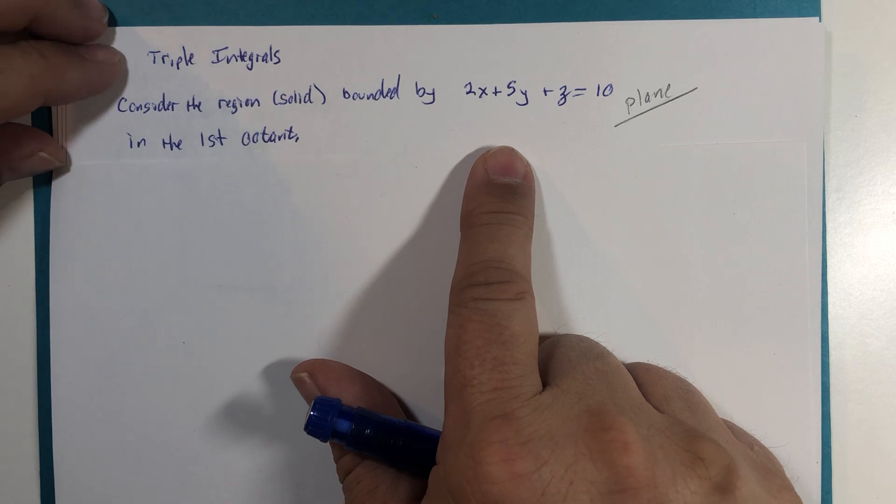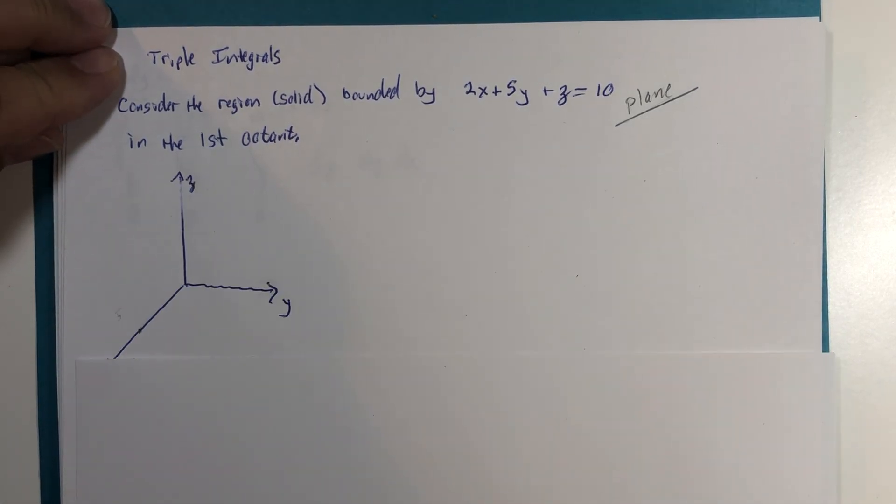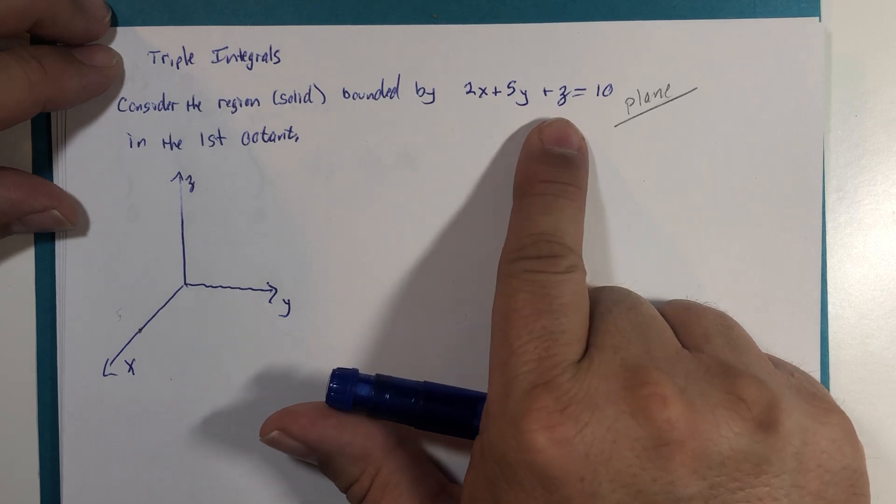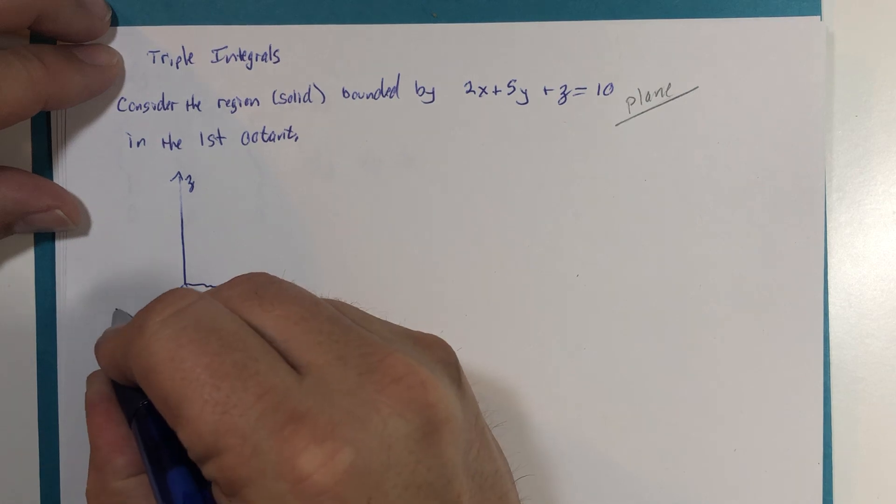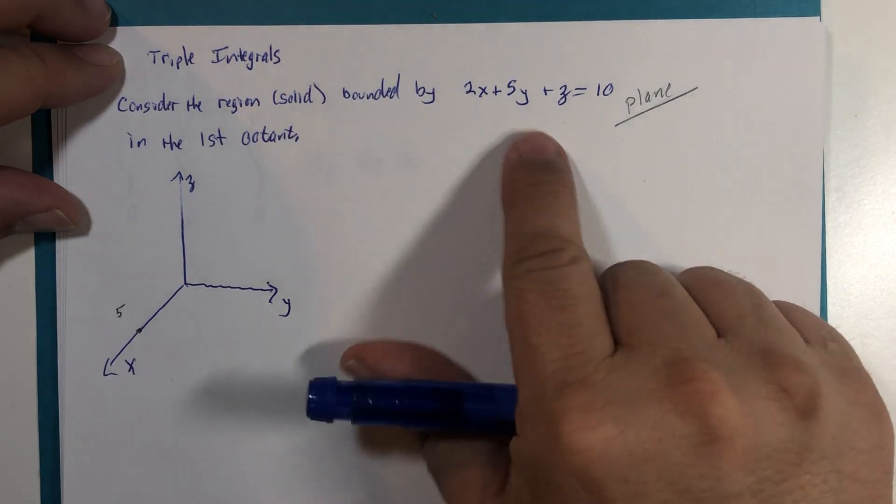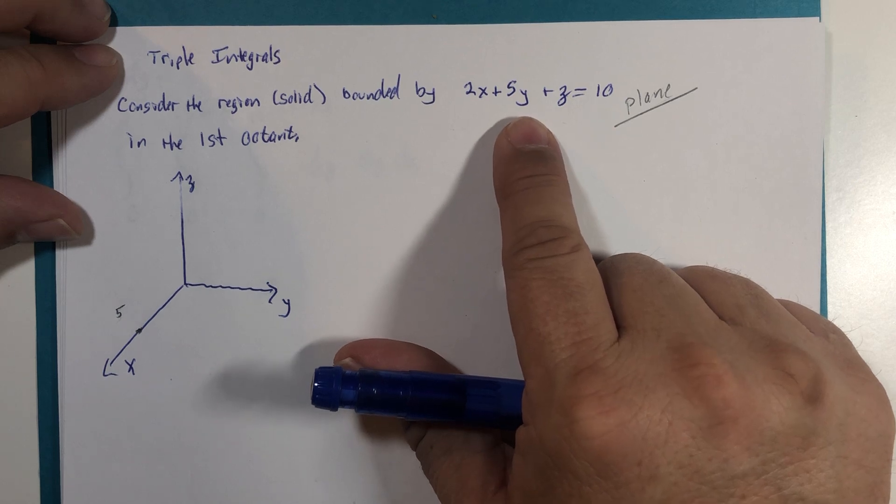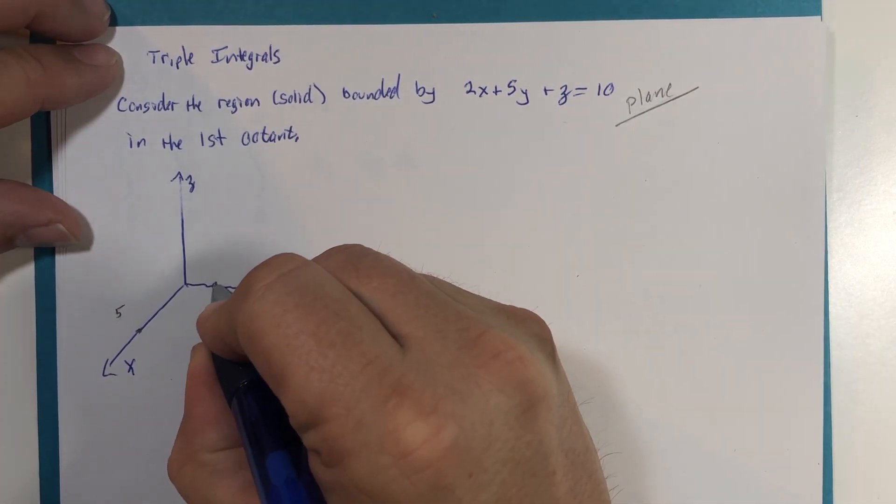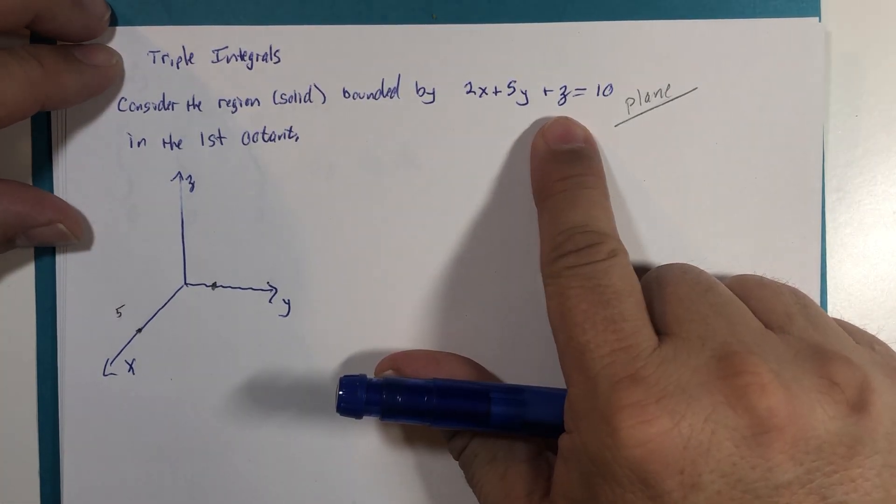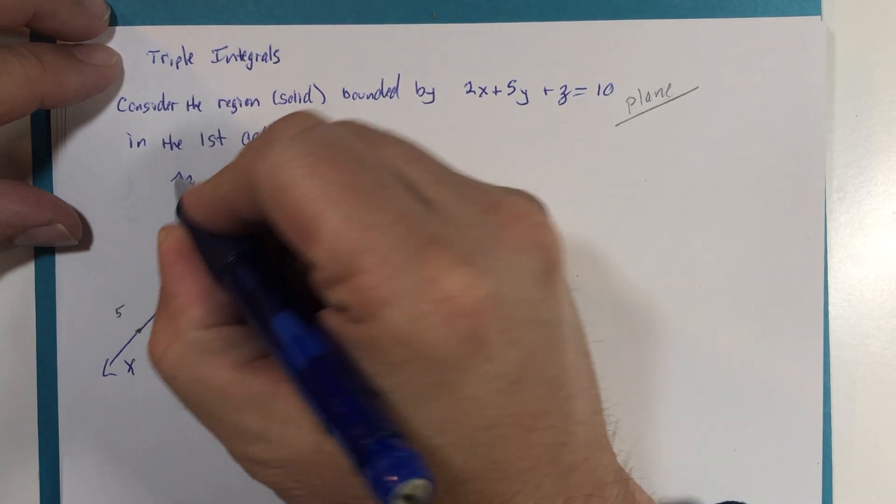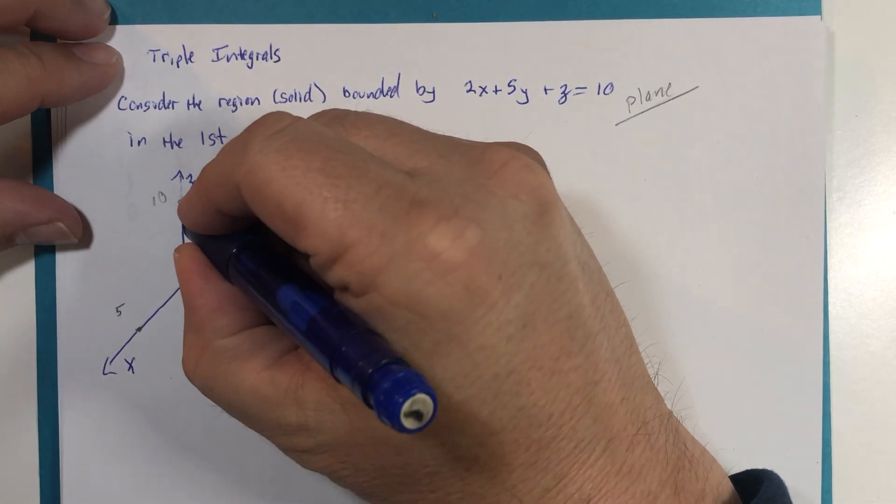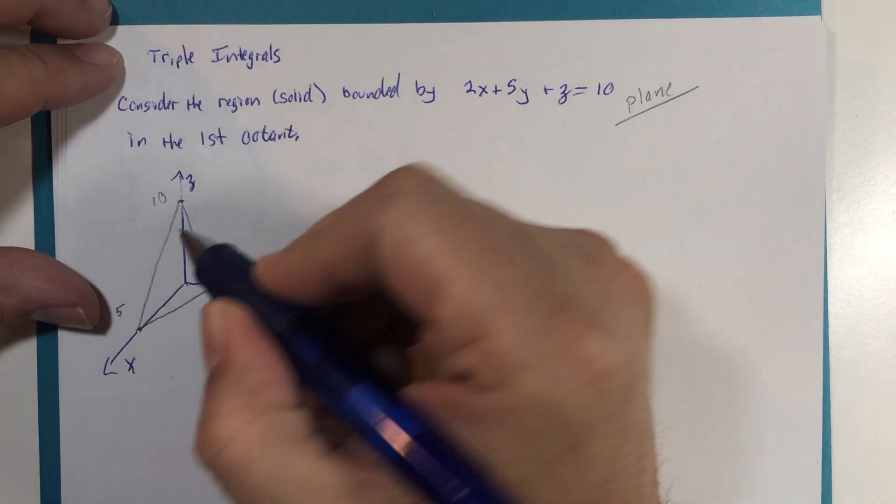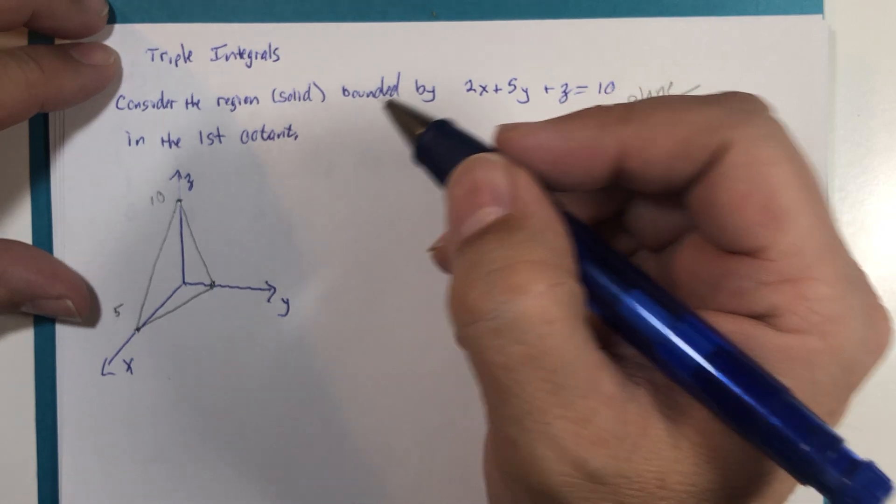And we're going to do a volume calculation for this particular example. So let's do a sketch. If x is 5, 2 times 5 is 10. And if y and z are both 0, we would have our x-intercept 5 units along the x-axis. And if y is 2, and x and z are both 0, then 5 times 2 is 10. So 2 units out along the y-axis. And finally, if z is 10 and x and y are 0, you would have what we would say is our z-intercept 10 units up. So that's not drawn to scale. But we've been using this triangle as a representation of the portion of the plane that's in the first octant.